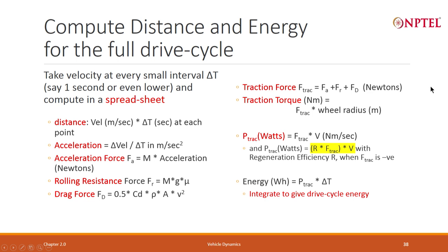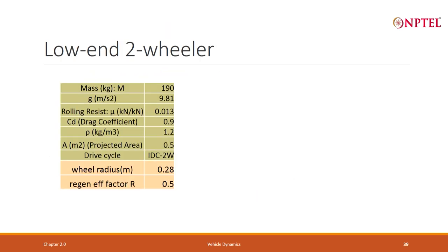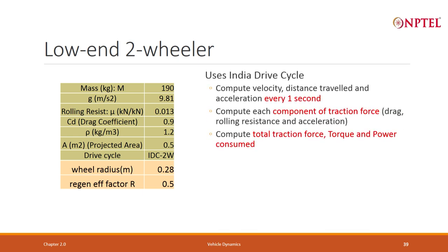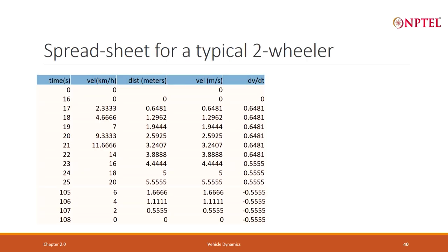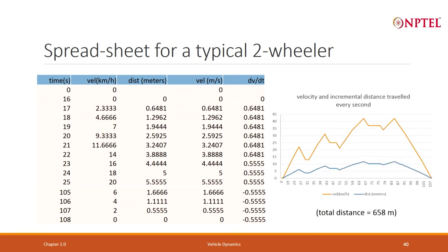What I have not done here is the slopes, because the India Drive Cycle does not define the slope. But in one of the assignment problems I gave you, I actually included the slope, so the spreadsheet changes a bit — we include one more force called the force due to gradient. Based on that, we define all the parameters for the two-wheeler. Under the assignment I asked you to build the spreadsheet; here we have only used the spreadsheet.